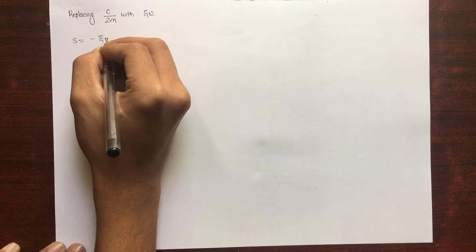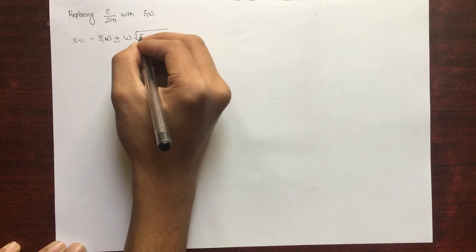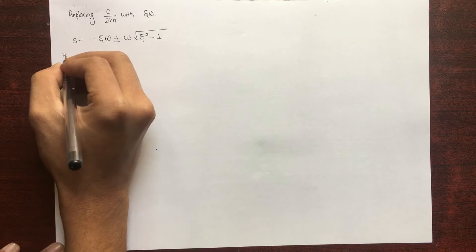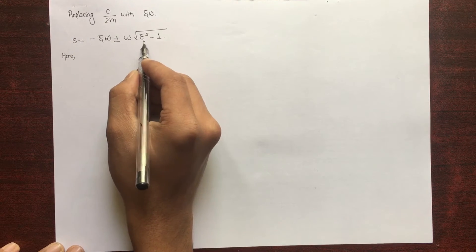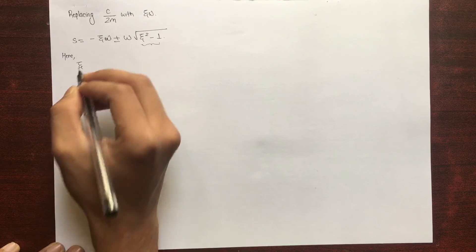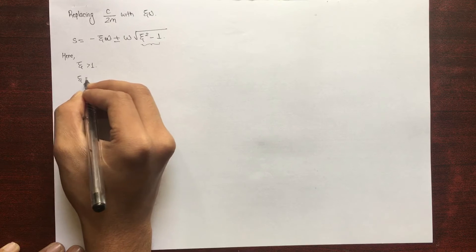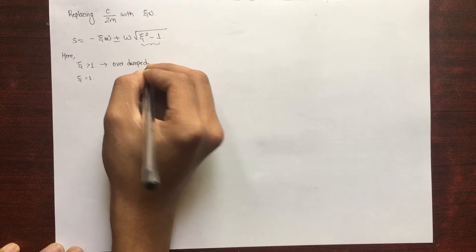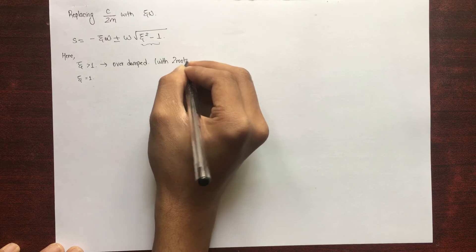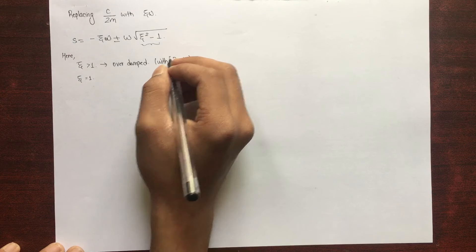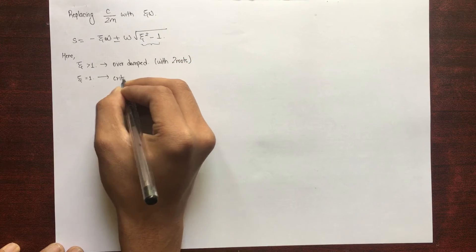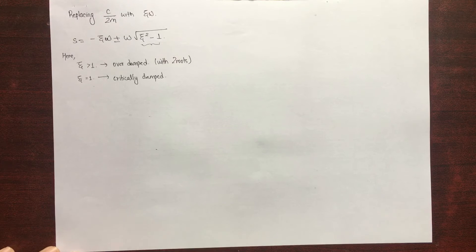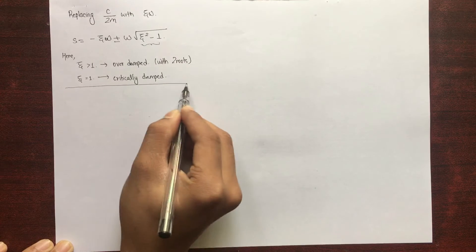Substituting, s = −ξω ± ω√(ξ² − 1). The three cases now become: if ξ > 1, the system is over-damped with two real roots; if ξ = 1, the system is critically damped with a single repeated root (the term under the root becomes zero); if ξ < 1, the system is under-damped with two imaginary roots.